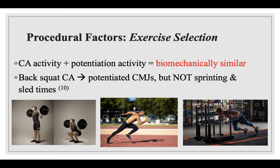The type of exercise selected for both the conditioning activity and the potentiating activity will affect PAP. Remembering the complex training definition, they theoretically need to be biomechanically similar. A study demonstrated this by looking at what a back squat could or could not potentiate: counter-movement jump performance was increased, but sprinting and sled times had no significant differences. The authors concluded that exercises should possess similar movement patterns to induce PAP, as sprinting and sled pushing have more of a horizontal propulsion component, whereas squatting and jumping are primarily vertical tasks.